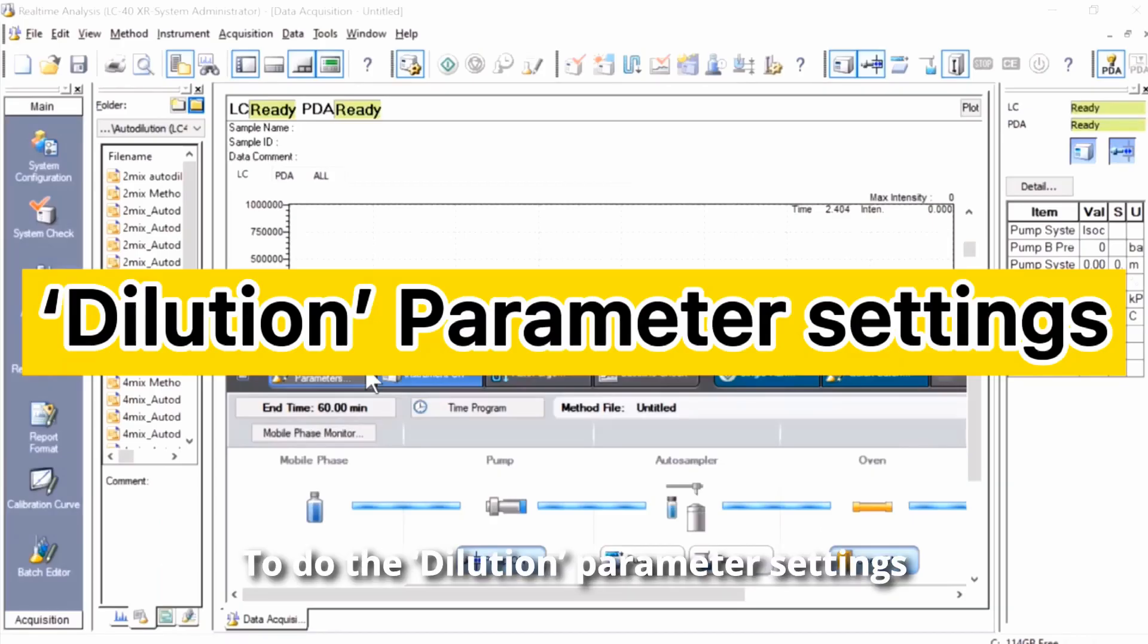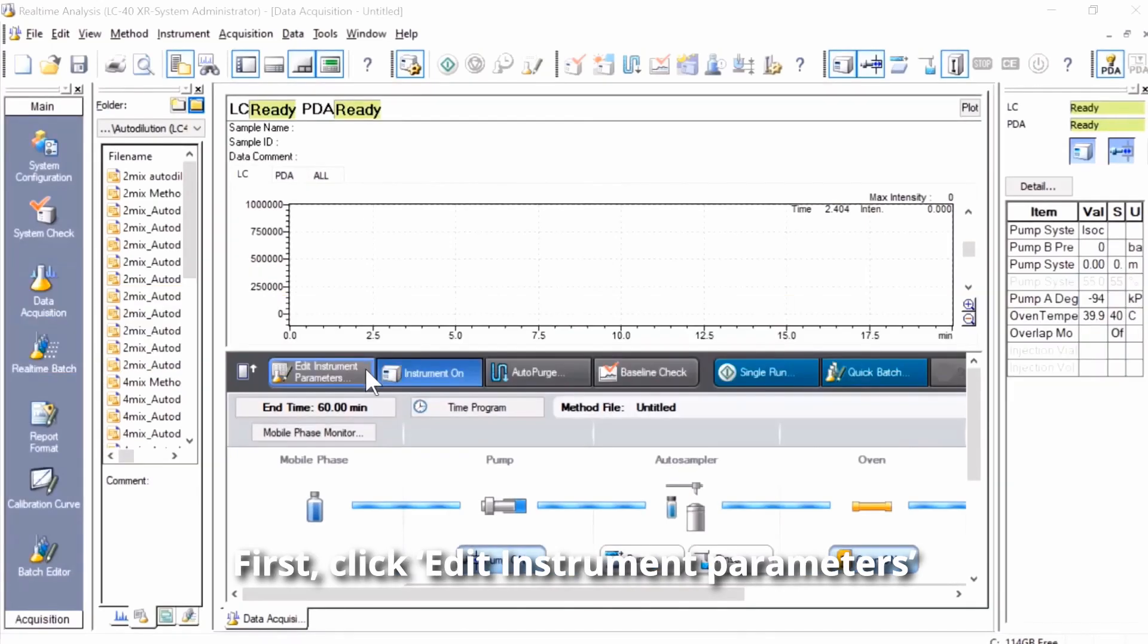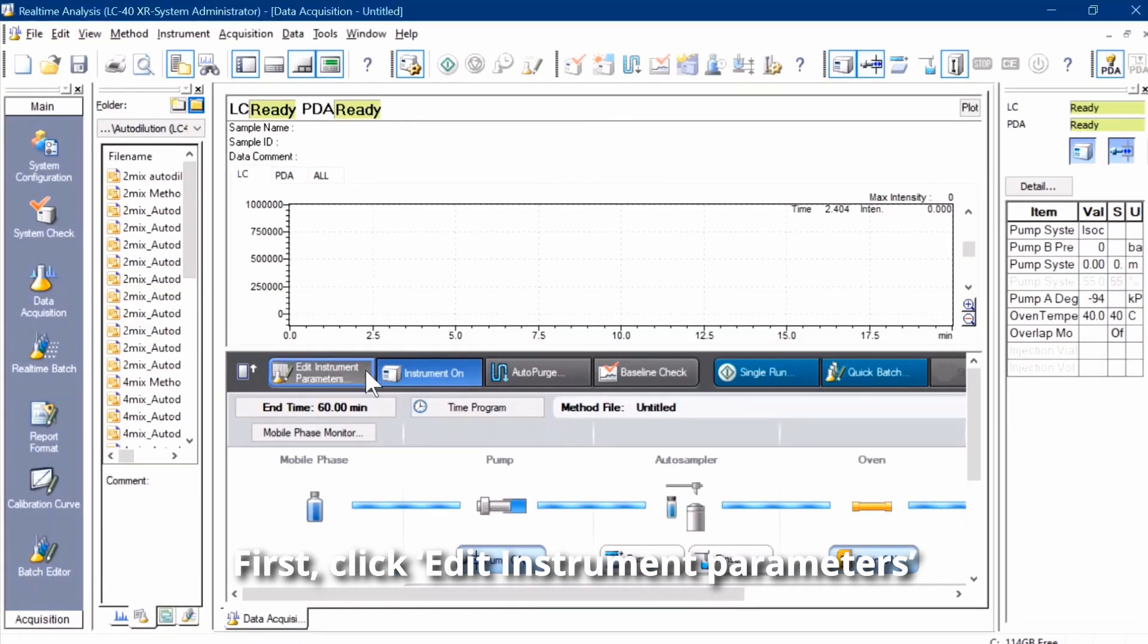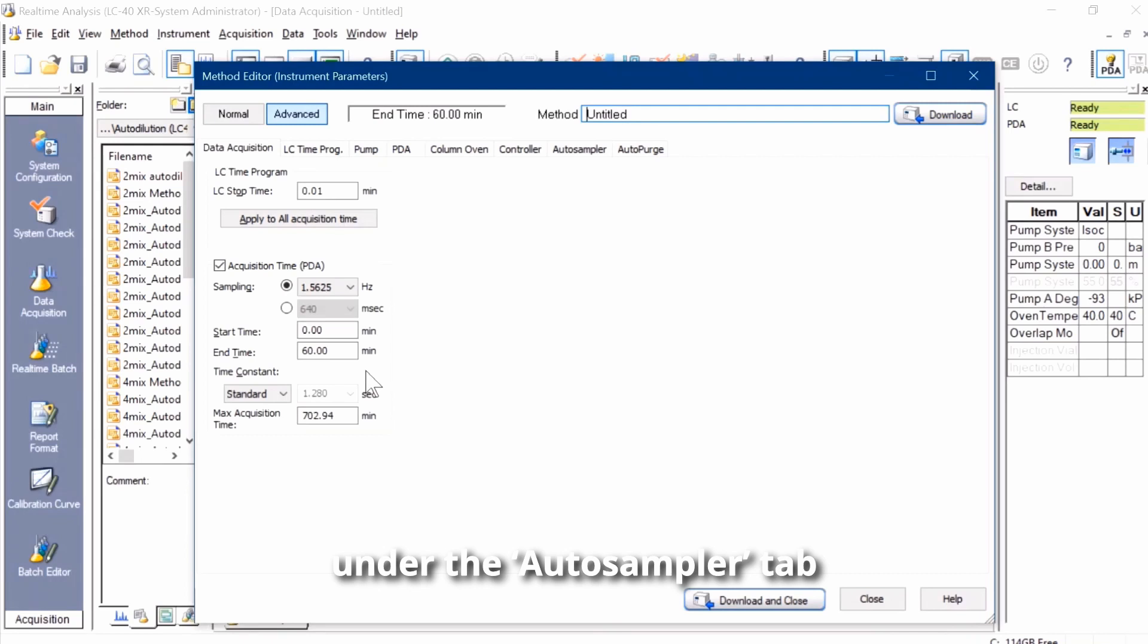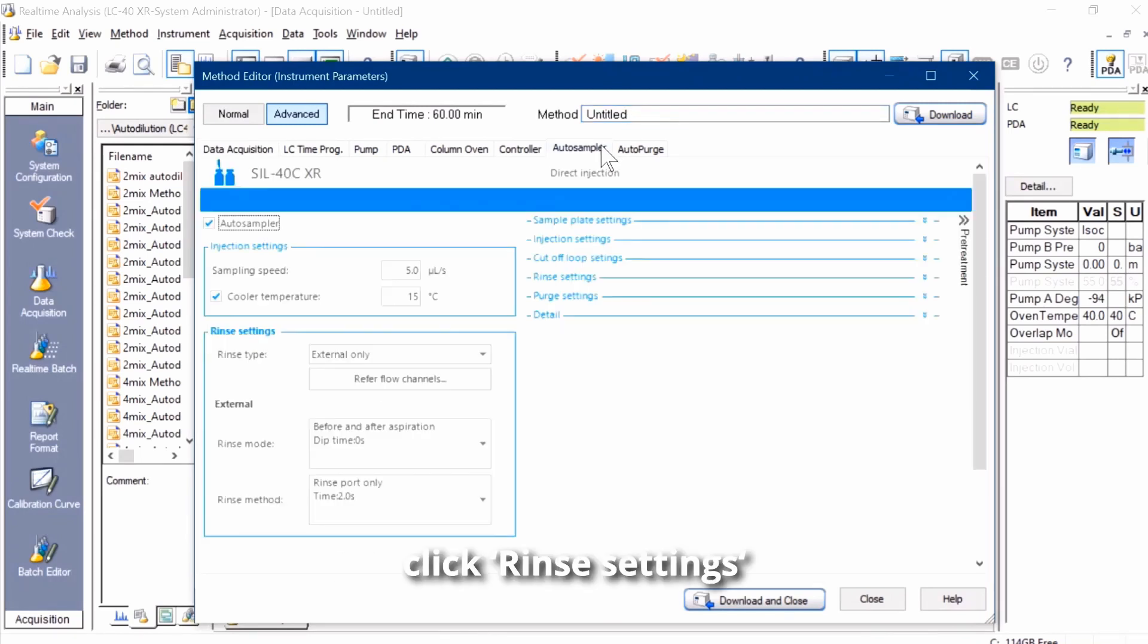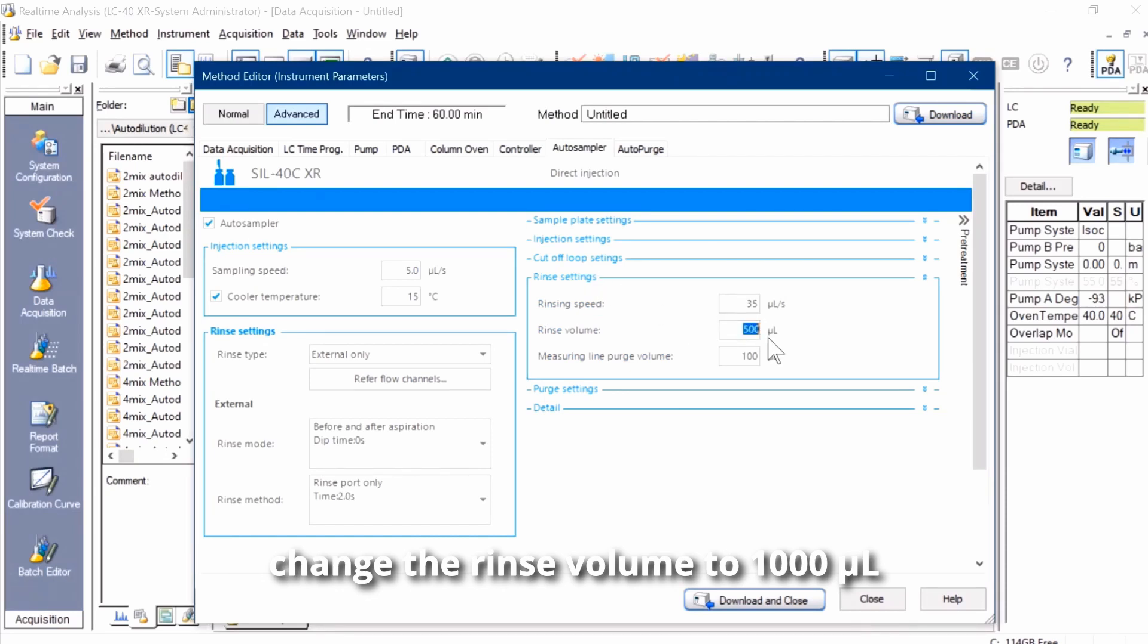To do the dilution parameter setting, first click Edit Instrument Parameters. Under the autosampler tab, click Rinse Settings, change the rinse volume to 1000 microliters.